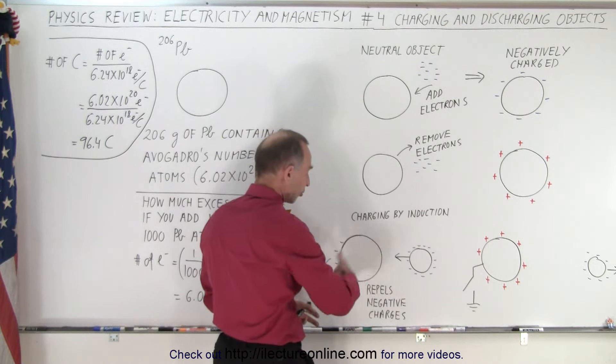Now, how do we charge objects by induction without actually touching objects? Well, what we can do is take a neutral object and have it connected to the ground, so that ground is a place where you can essentially put an infinite number of positive and negative charges.